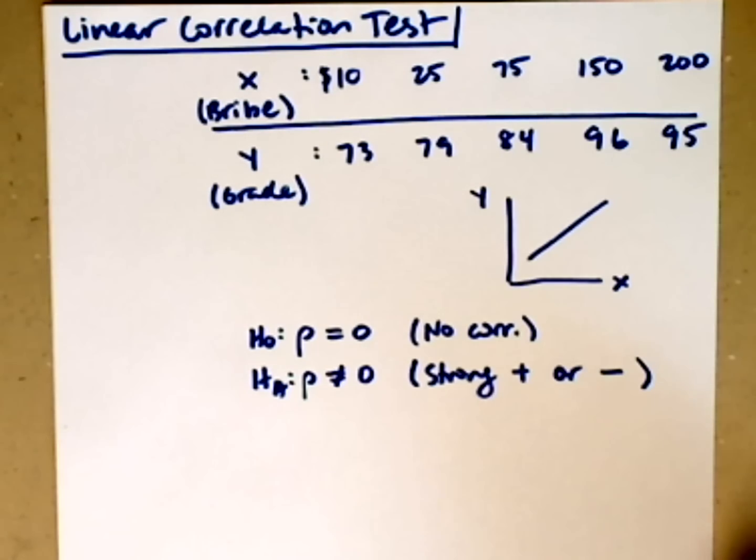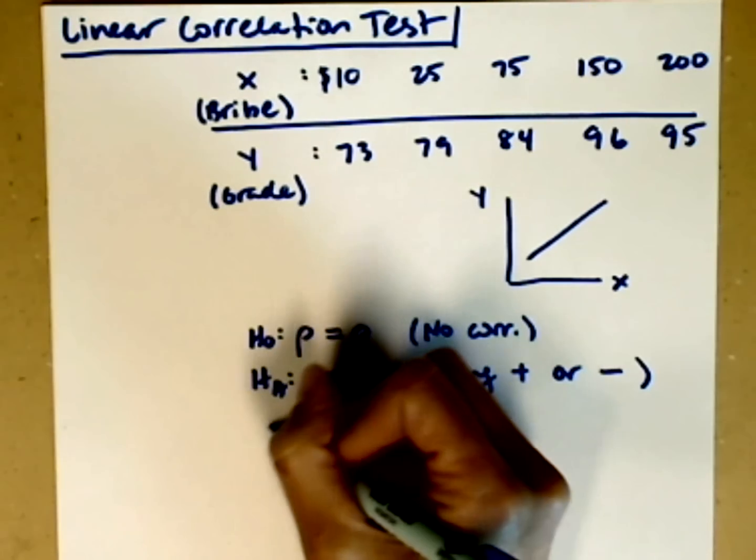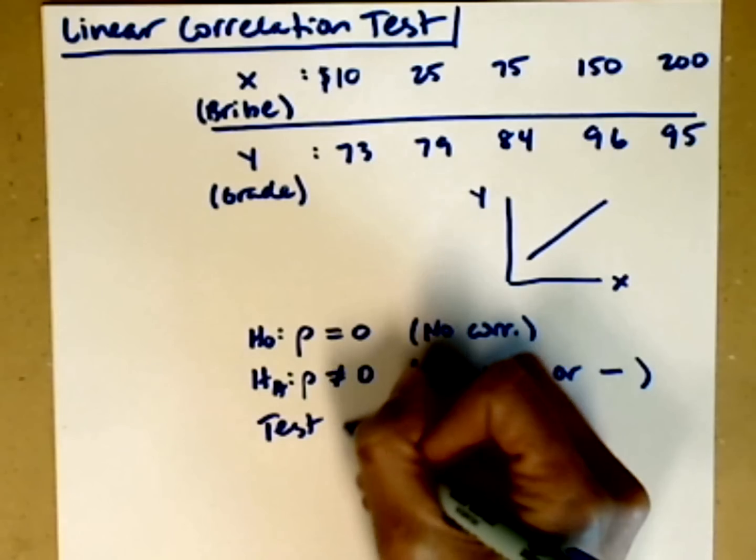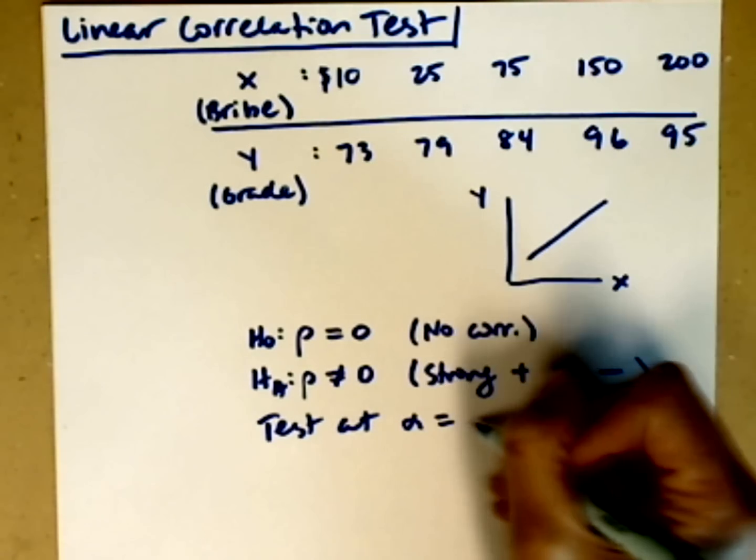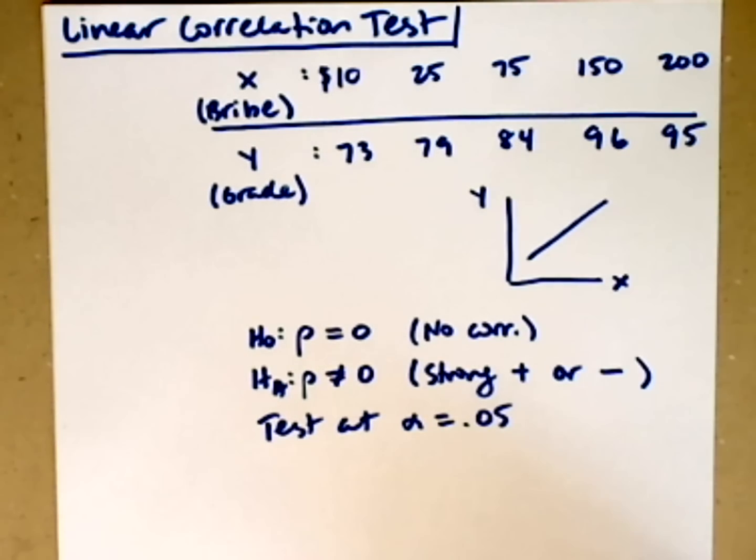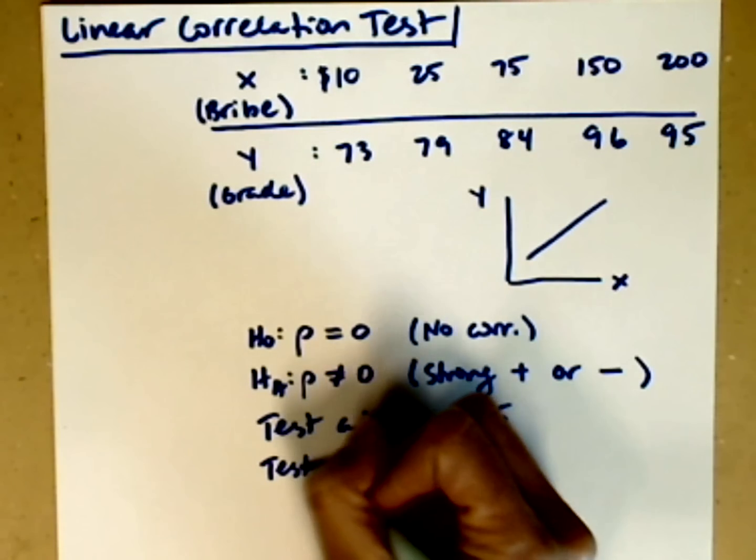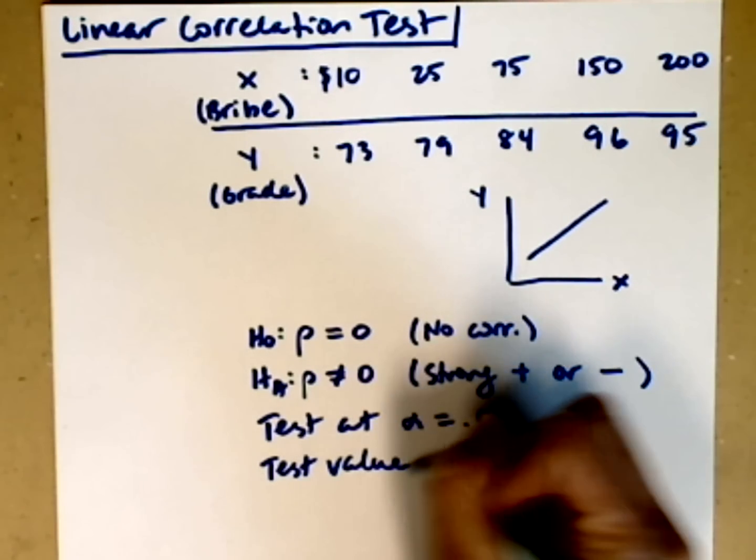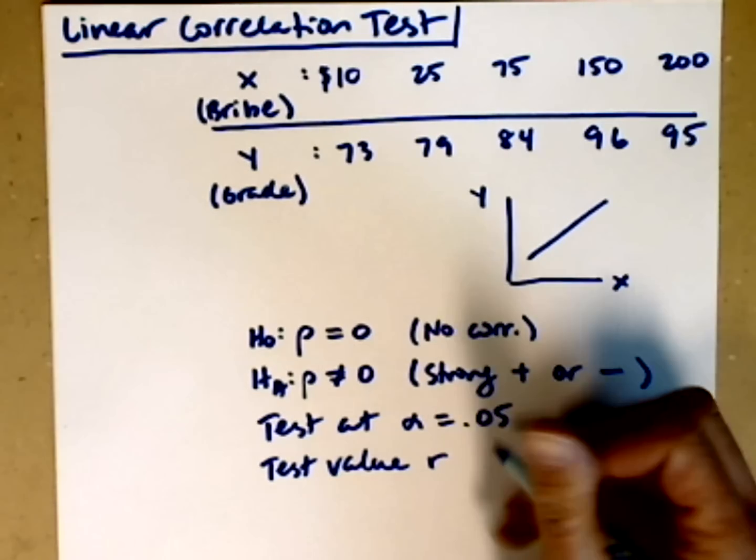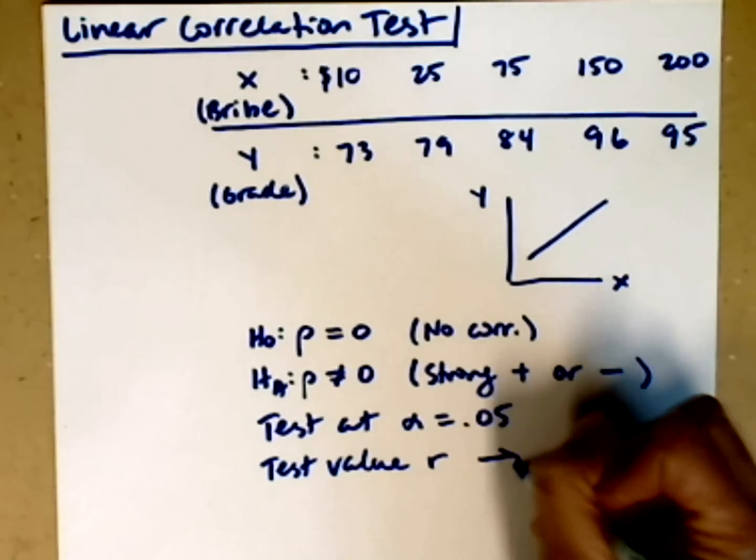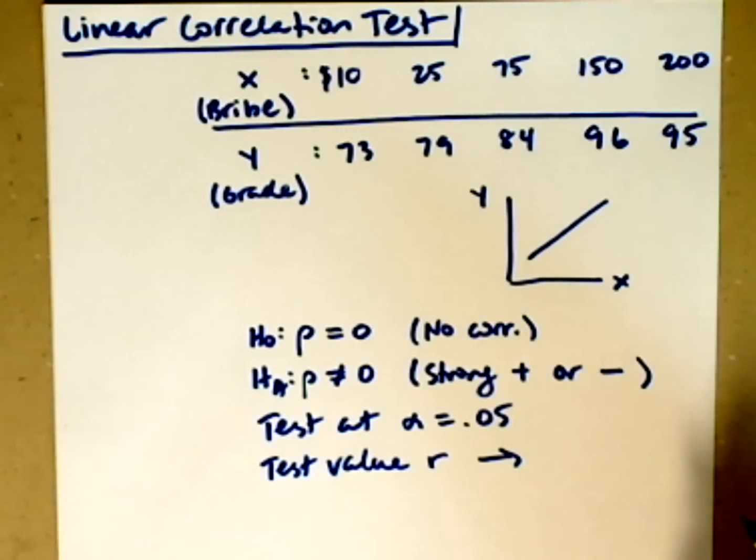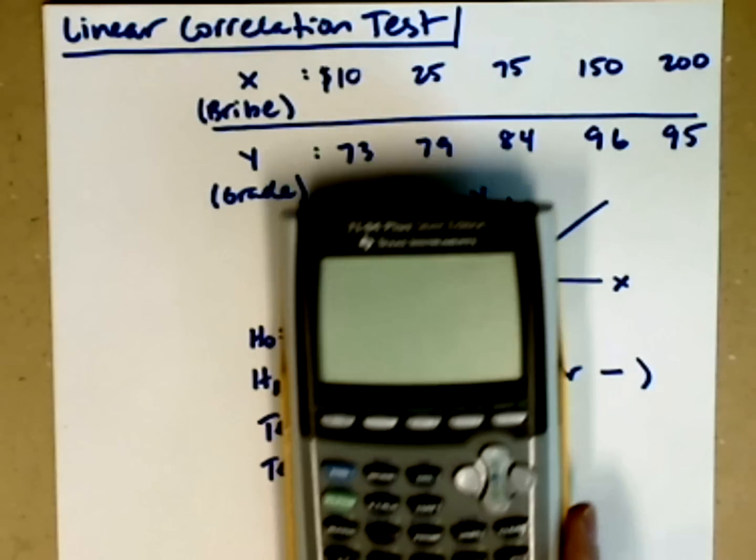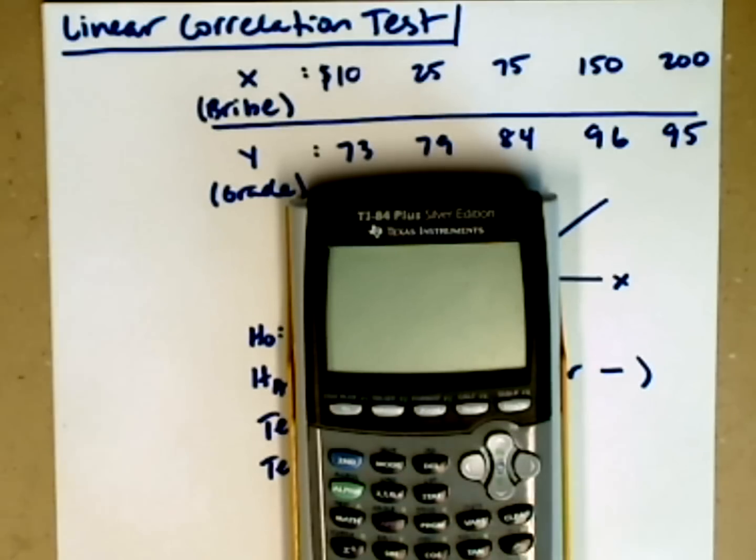So what we need to do is to come up with the test value r. Let's go ahead and test this at alpha equal .05. To find the test value r, which is our correlation coefficient, we are going to use the calculator. There is a formula in your textbook, but it's so much easier just to let the calculator do the work. I'm going to put my calculator here in front and type these values in.